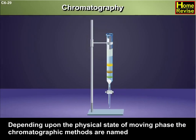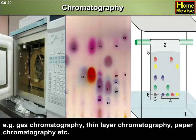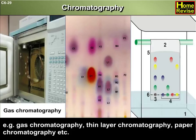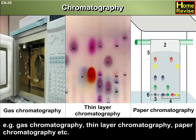Depending upon the physical state of the moving phase, the chromatographic methods are named. For example: gas chromatography, thin layer chromatography, paper chromatography, etc.